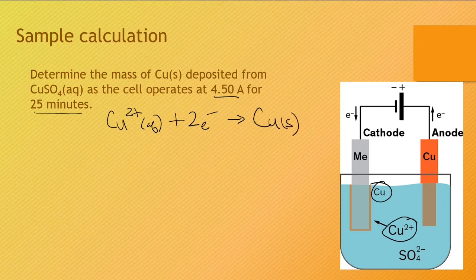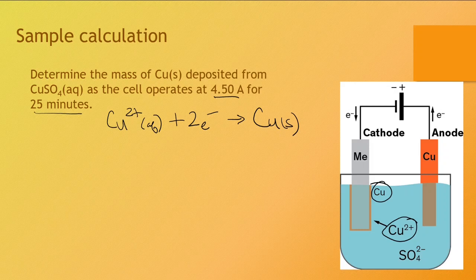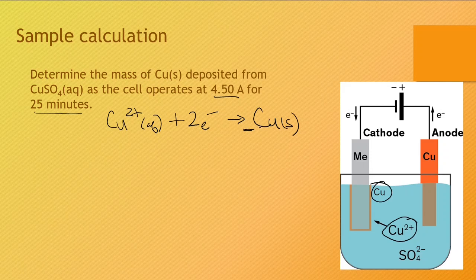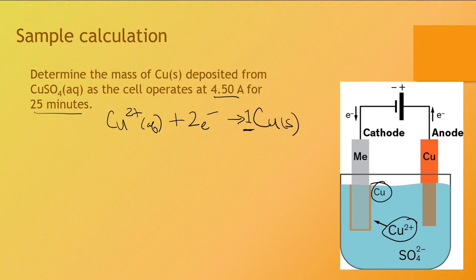So that being said, we can use that information to produce a mole ratio between the balance of copper and electrons in order to answer this question. We will additionally need the molar mass of copper, which we can reference from our data booklet in order to solve the problem. The solution would look something like this.